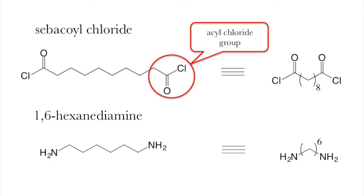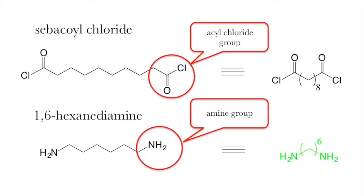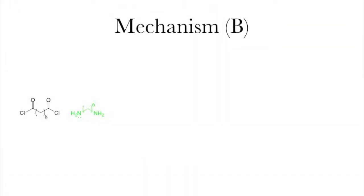And 1,6-hexanediamine, which has these highly nucleophilic amine groups. Now on the right hand side you'll see my abbreviations for these two chemicals. I've turned one of them green so you can distinguish the two easily enough. Now when we bring these two chemicals together, the lone pair on the amine will go ahead and attack the carbonyl carbon, eventually kicking out the chlorine.